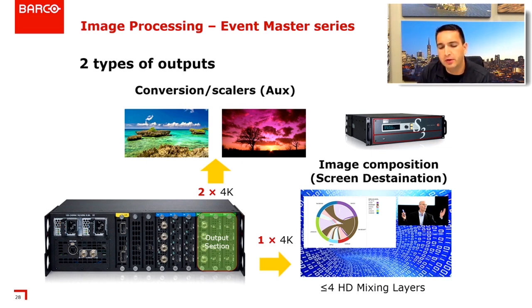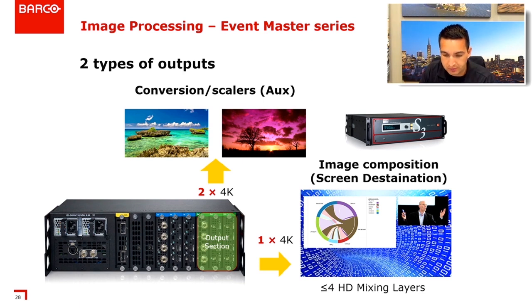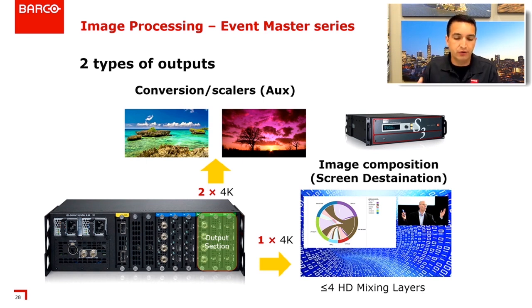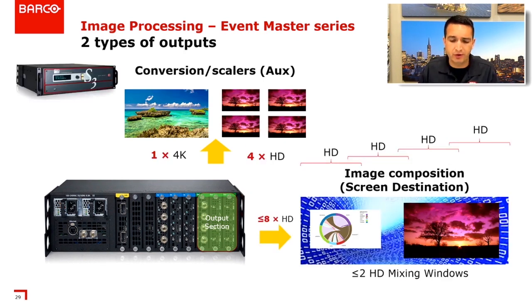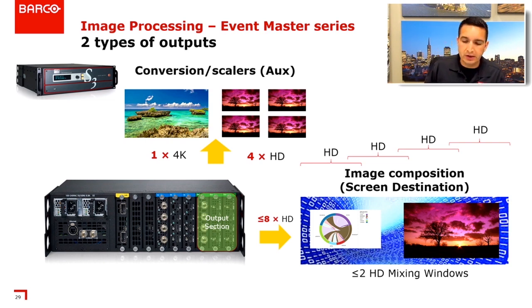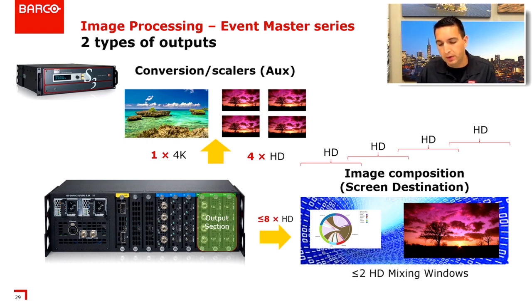For the S3 specifically: doing one 4K out gives you up to four HD mixing layers; two 4K out gives you up to two HD mixing layers. You can also break it down into HDs — up to eight HD outs with one single layer per destination, or up to two HD mixing windows split across four HD outs.